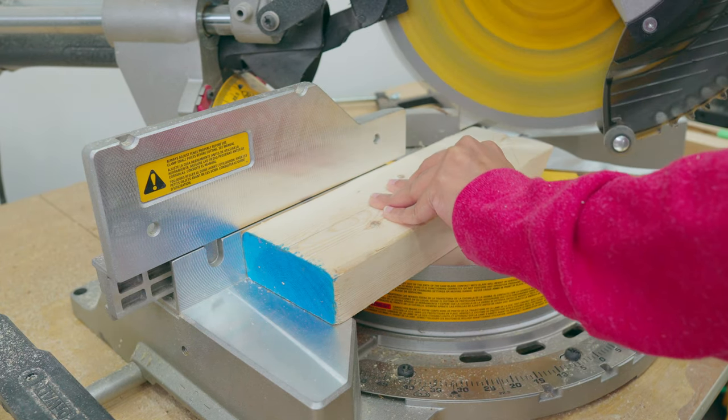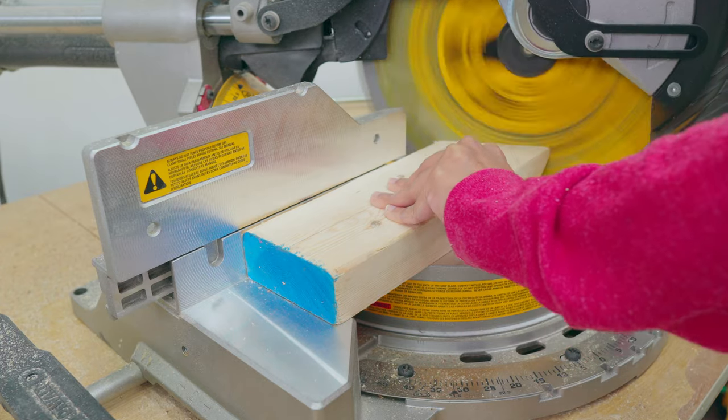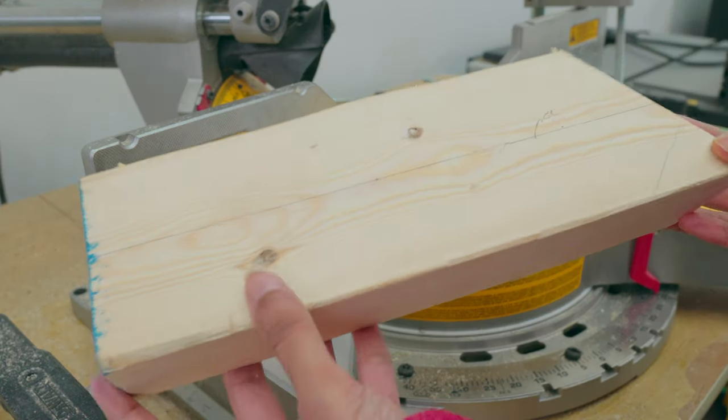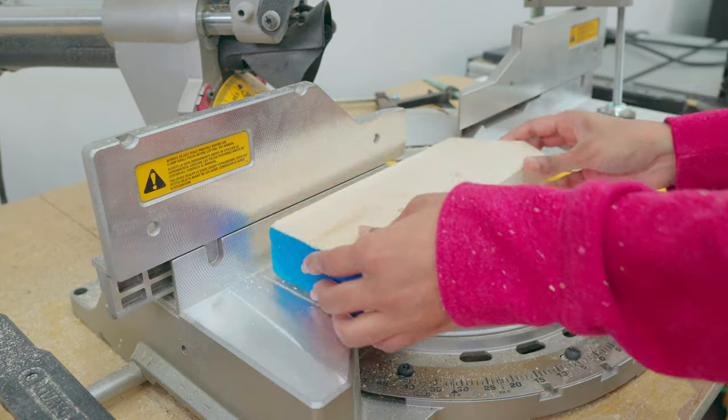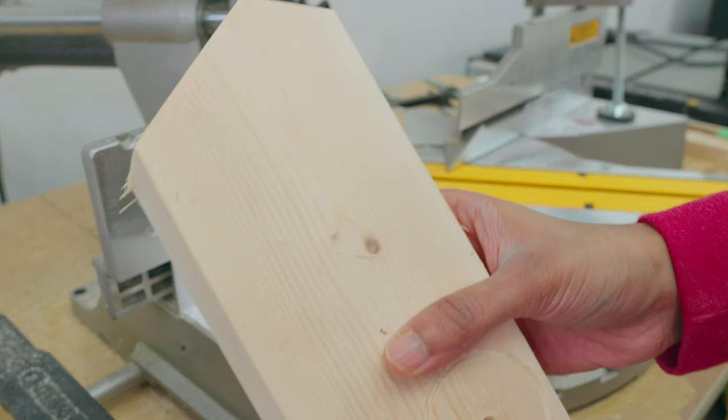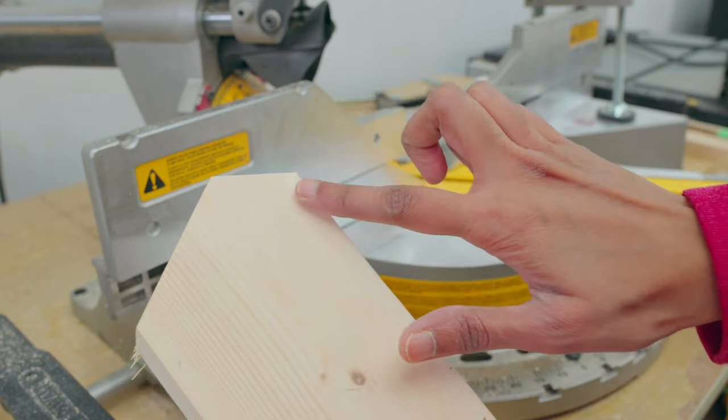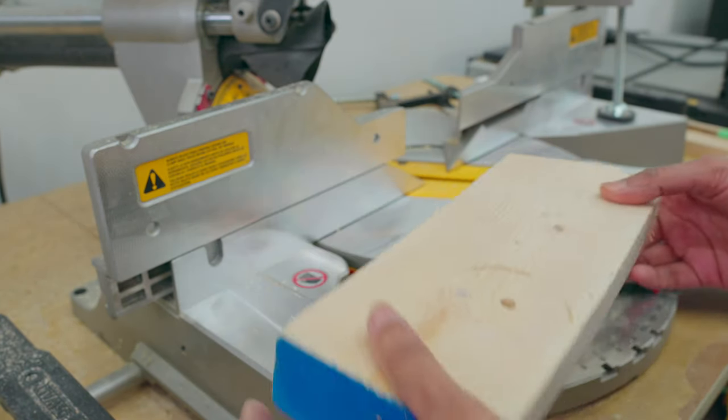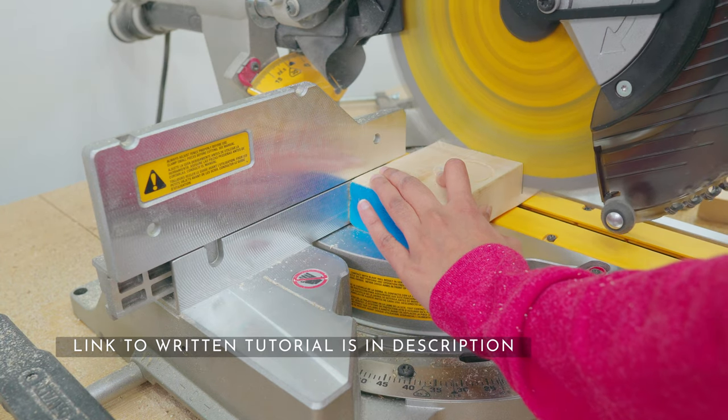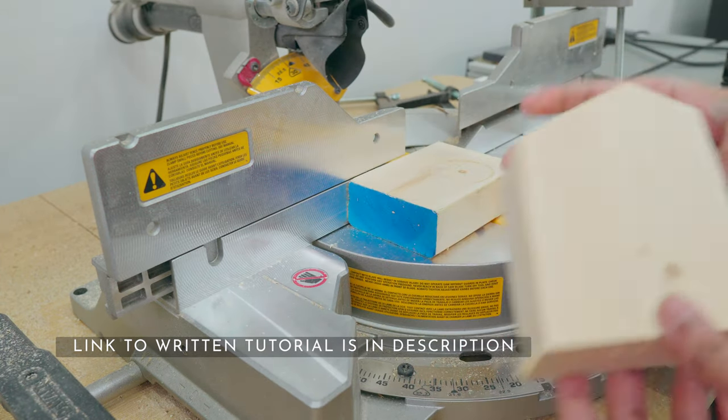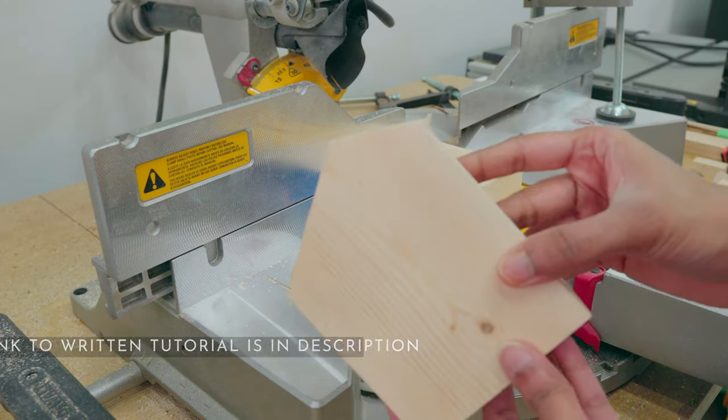Chop off those angles with a miter saw. Then do a straight cut at 3 and a half inches away from the top. Now you have a house shaped block.